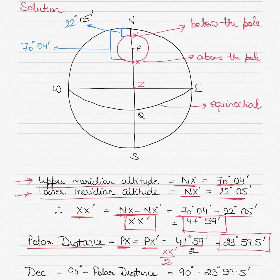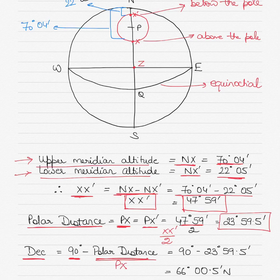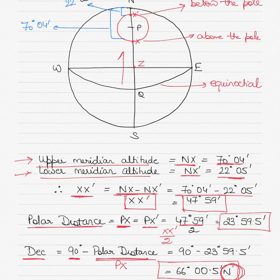So 23 degrees 59.5 minutes is the polar distance, that is PX and also PX dash. Declination is the distance from the celestial equator to the celestial body — we call it declination rather than latitude. Declination, which is the distance QX, equals 90 degrees minus polar distance PX. So 90 degrees minus 23 degrees 59.5 gives declination QX as 66 degrees 00.5 minutes, and it is north because the star is north of the equinoctial.